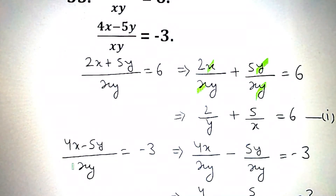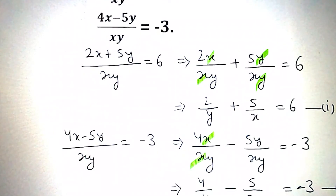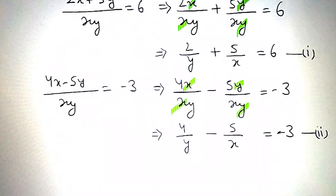Again, (4x minus 5y)/xy equals minus 3. It can be written as 4x/xy minus 5y/xy equals minus 3. xx will get cancelled, giving 4/y, and yy will get cancelled, giving minus 5/x equals minus 3. That is equation number 2.